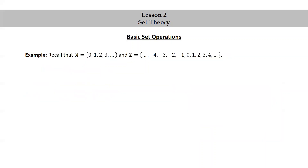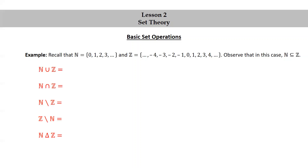Let's look at another example. Recall that ℕ is the set {0, 1, 2, 3, ...}, the set of natural numbers. And ℤ is the set {..., -4, -3, -2, -1, 0, 1, 2, 3, 4, ...}, the set of integers. Observe that in this case ℕ is a subset of ℤ. Let's compute the union, intersection, the differences, and the symmetric difference between ℕ and ℤ. Well, ℕ union ℤ is ℤ. The intersection between ℕ and ℤ is ℕ. ℕ minus ℤ is the empty set. And ℤ minus ℕ is the set {..., -4, -3, -2, -1}, the negative integers, which we denote by ℤ⁻.